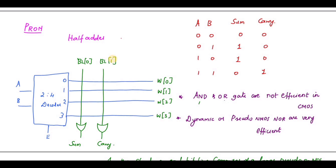Since there are two inputs, the decoder formula is 2^n, so 2^2 = 4 outputs: 0, 1, 2, 3. For word lines one and two the Sum is one, so those transistors are included. For Carry, word line three has value one. The Sum expression is A̅B + AB̅, which requires an OR gate, but since AND and OR gates are not efficient we use CMOS logic — specifically dynamic or pseudo-NMOS logic.